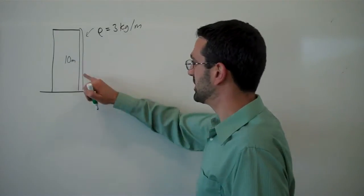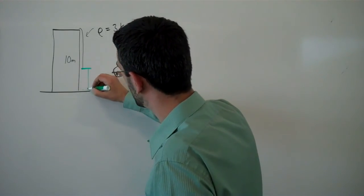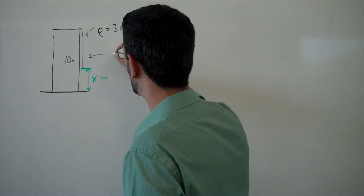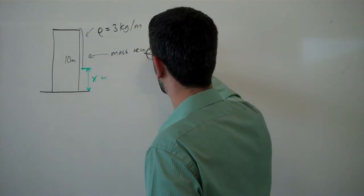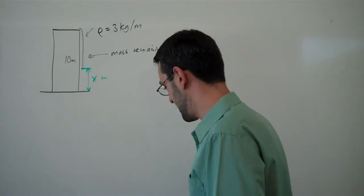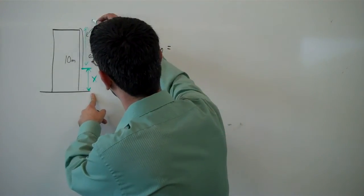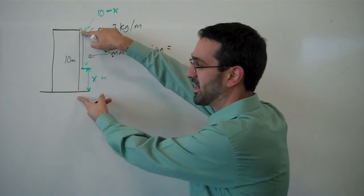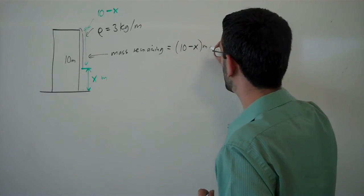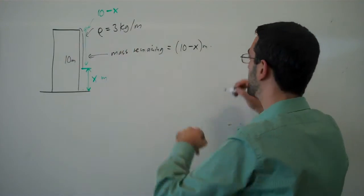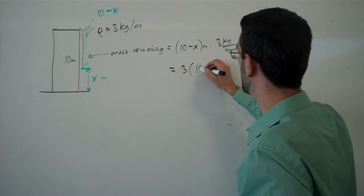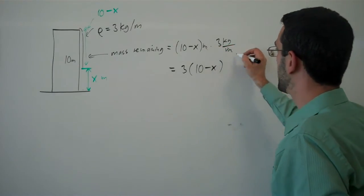So let's imagine that we've already lifted the chain x meters. So we might ask ourselves, how much mass remains? Well, let's see, how much chain remains? So if this length is x, then this length will be 10 minus x, total height of 10 minus that x. So we have 10 minus x meters remaining, each having a mass of 3 kilograms. So we've got 3 kilograms per meter of mass. So the remaining mass will be 3 times 10 minus x kilograms.